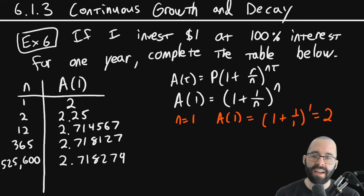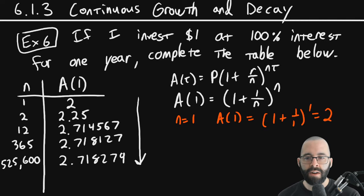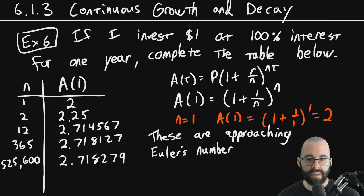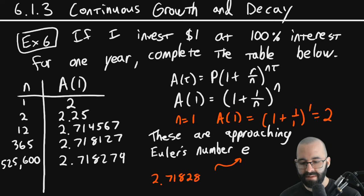And we could keep on going compound every second, compound every millisecond, and you're just going to see that these values are approaching something. And this number they're approaching is called Euler's number. As it is pronounced Euler, not Euler. It's Euler's number, and we write Euler's number, E. And E is an irrational number, and it's about 2.7182. It's about, but it goes on forever.